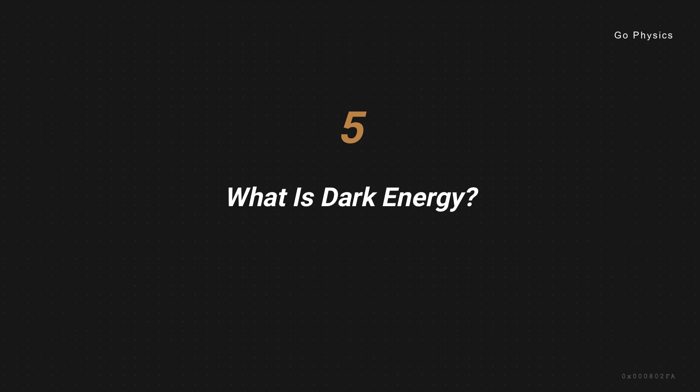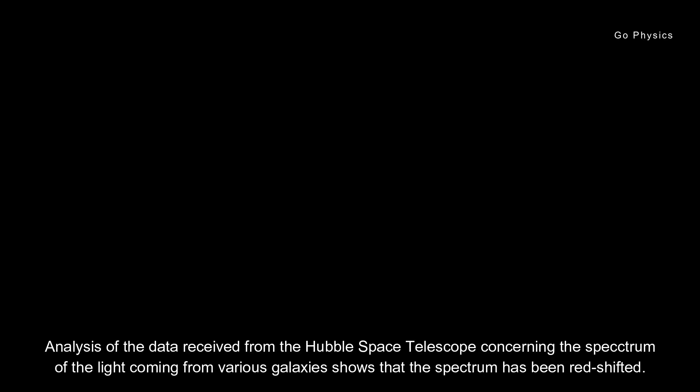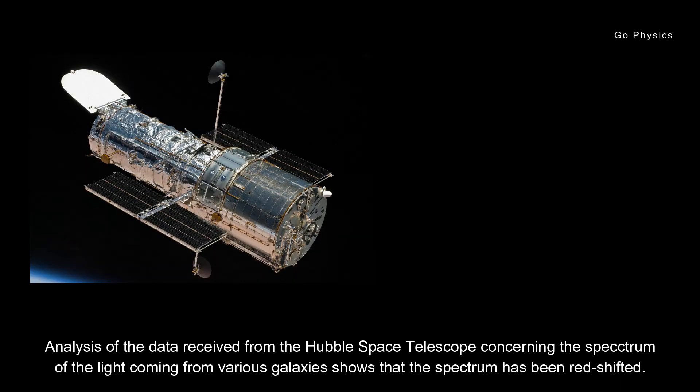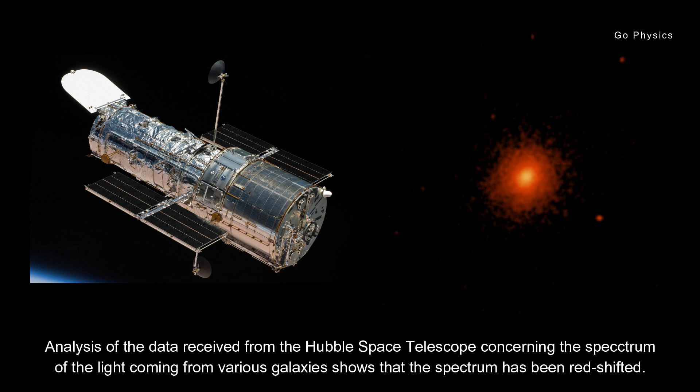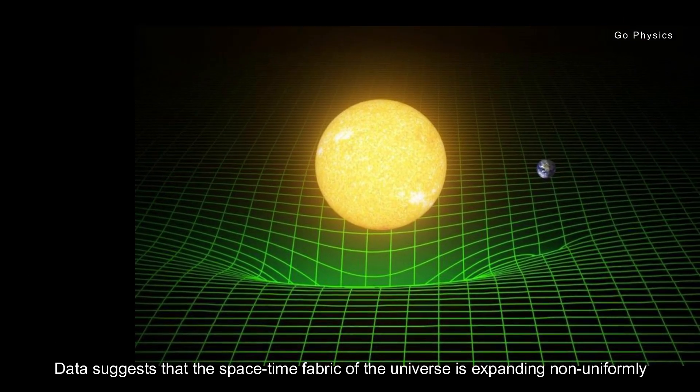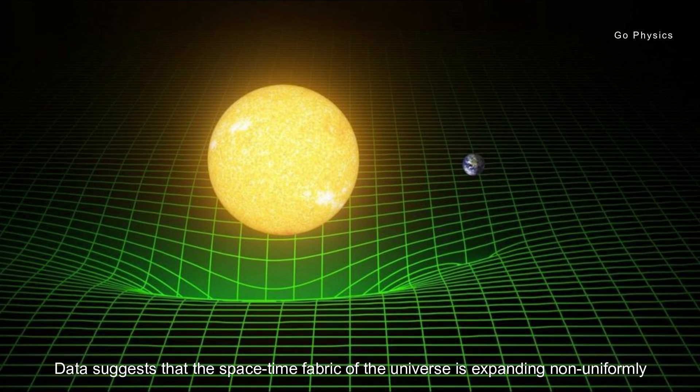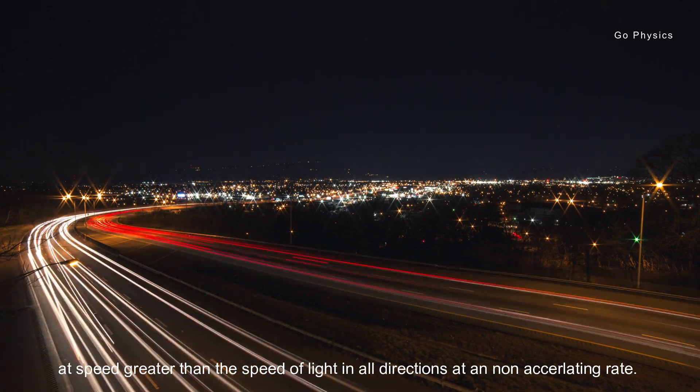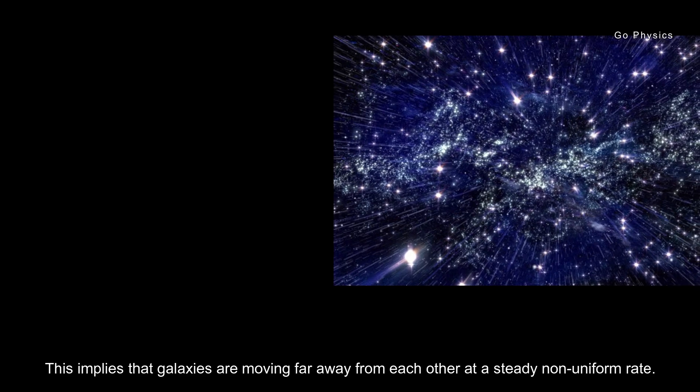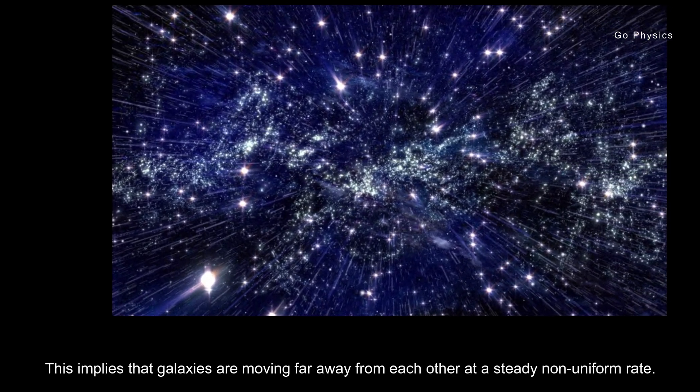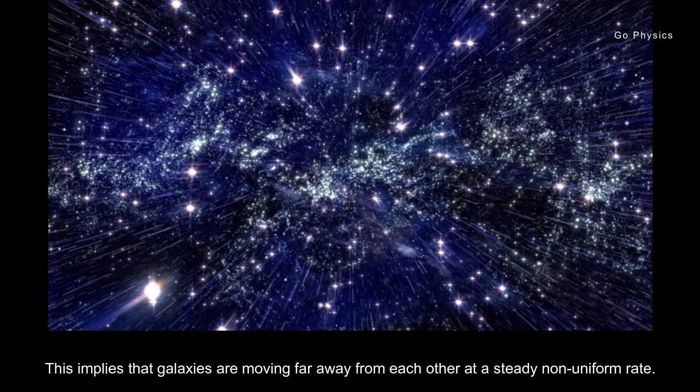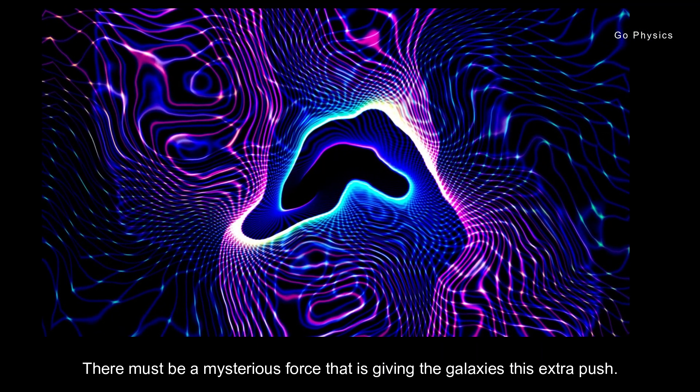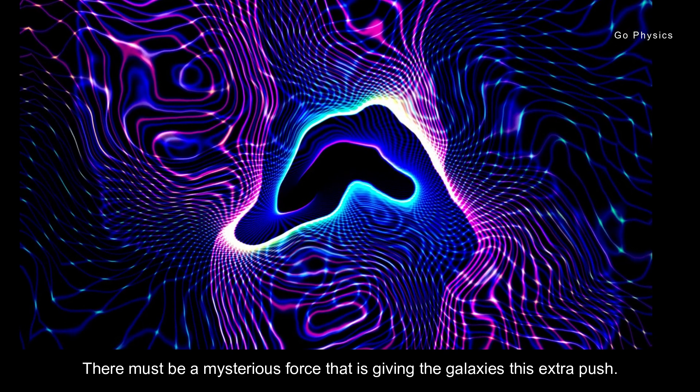What is dark energy? Analysis of the data received from the Hubble Space Telescope concerning the spectrum of light coming from various galaxies shows that the spectrum has been redshifted. Data suggests that the space-time fabric of the universe is expanding non-uniformly at a speed greater than the speed of light in all directions at an accelerating rate. This implies that the galaxies are moving far away from each other at a steady non-uniform rate. There must be a mysterious force that is giving the galaxies this extra push.